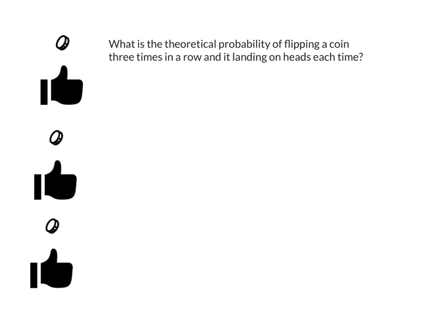Here's an example of how you could use a tree diagram to figure this out. So I'm going to label this one flip one, then flip two, and then flip three.